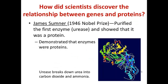A second scientist, James Sumner, who won the Nobel Prize in 1946, contributed by purifying the first enzyme, urease, and showing that this enzyme was, in fact, a protein. He was able to crystallize urease — an enzyme that breaks down urea into carbon dioxide and ammonia — demonstrating that enzymes were proteins. So now we know that heritable diseases are due to malfunctioning enzymes, and enzymes are proteins.